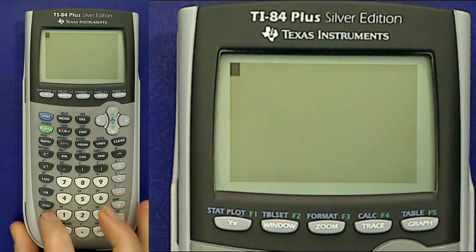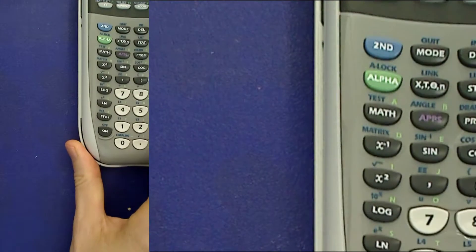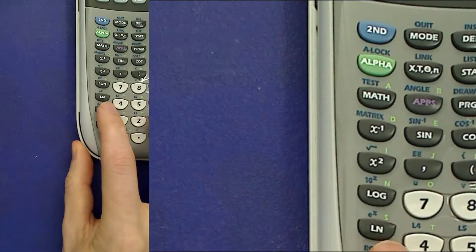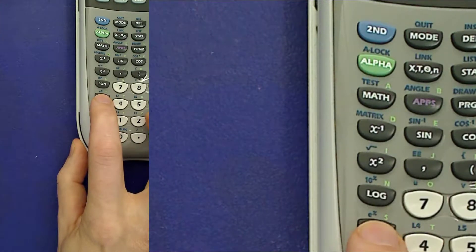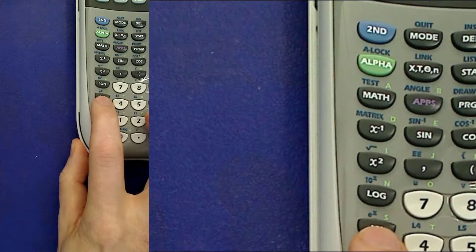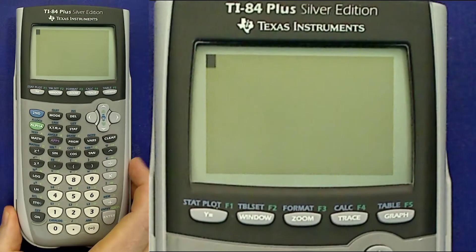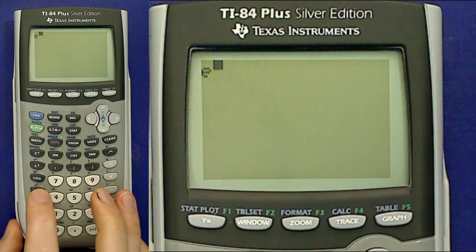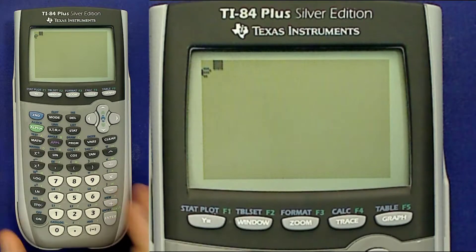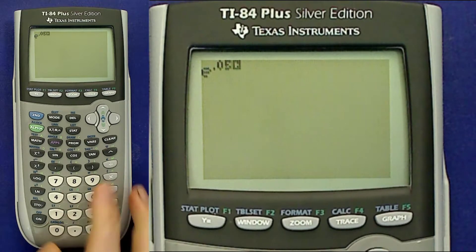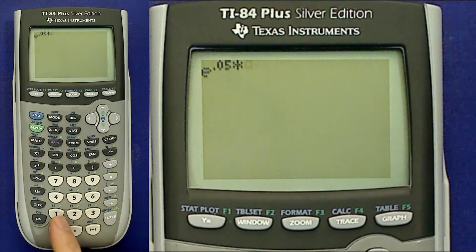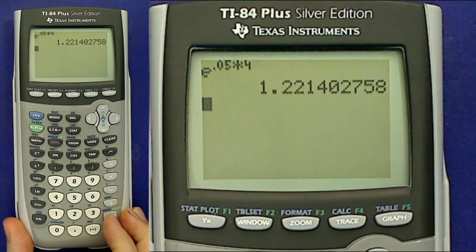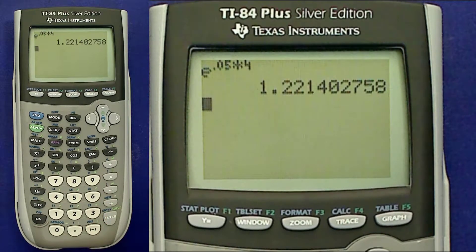First is that the key you will most often be using for doing exponential calculations is right here where you see e to the x above this key marked ln. I'll say more about ln in another video. So you hit second and this button to get the e to the power symbol. For example, part of the calculation we did in a previous video was e to the 0.05 times 4, and that's the result. That is the key that you will use most often.